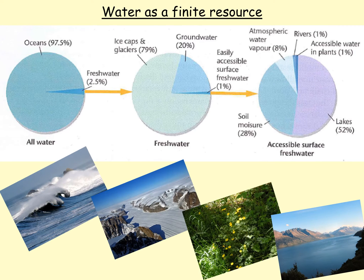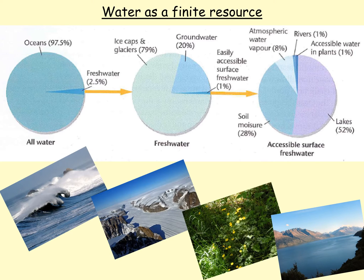We're going to look at water as quite a finite resource. There are a few statistics we need to take into consideration. If you take all of the water on Earth — absolutely every drop — 97.5% is in the oceans. Whilst desalination can allow that water to be usable, generally speaking it's only really the fresh water that we can realistically use. That represents just 2.5%.